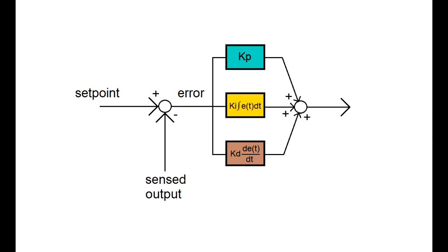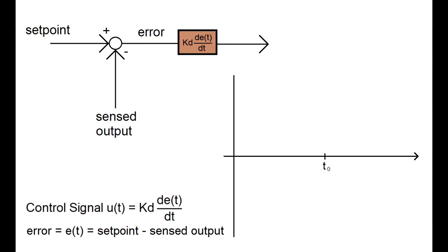Let's look at how this new term handles the error signal. The job of the derivative term is to take the rate of change of the error as its control signal. So by applying a step change in the set point, we again get a positive error as shown.